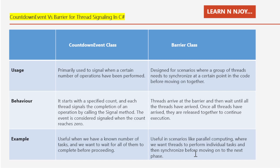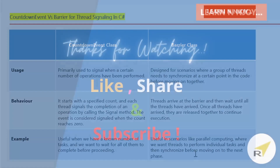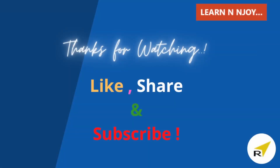To sum up, in this video we explored two powerful tools for thread signaling: CountdownEvent and Barrier classes. We implemented them through examples and discussed their differences. CountdownEvent excels at tracking individual task completions, while Barrier facilitates thread synchronization at a specific point enabling coordinated progress. Understanding these synchronization primitives equips you to effectively manage thread interaction, ensuring efficient parallelism and coordinated execution in complex applications.